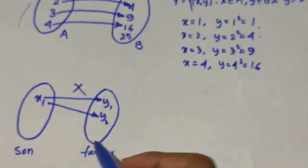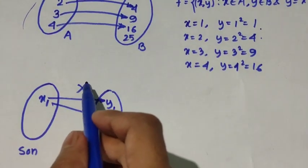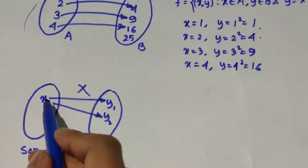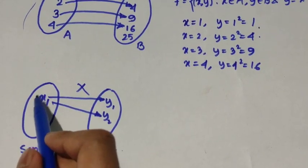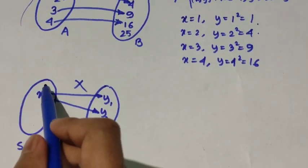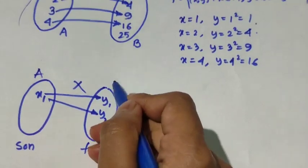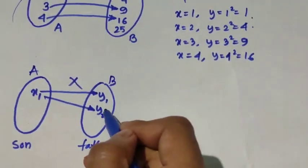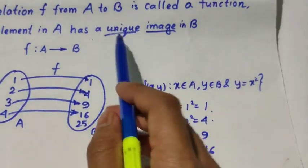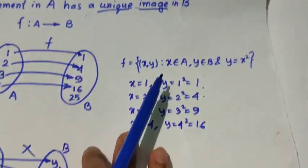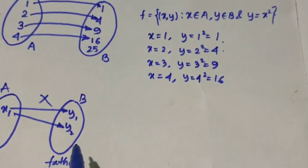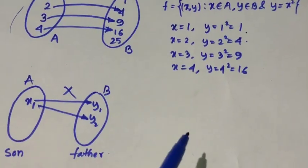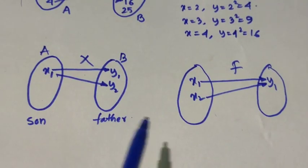Now, if you find this type of mapping anywhere, you can directly say it is not a function. Why? Because here you can see that for a single element of A we have two images in B. But according to our definition there must be a unique image, so this doesn't hold our definition and it is not a function.